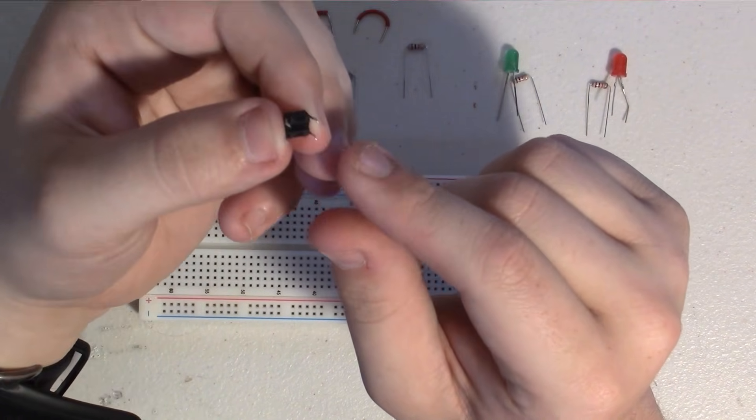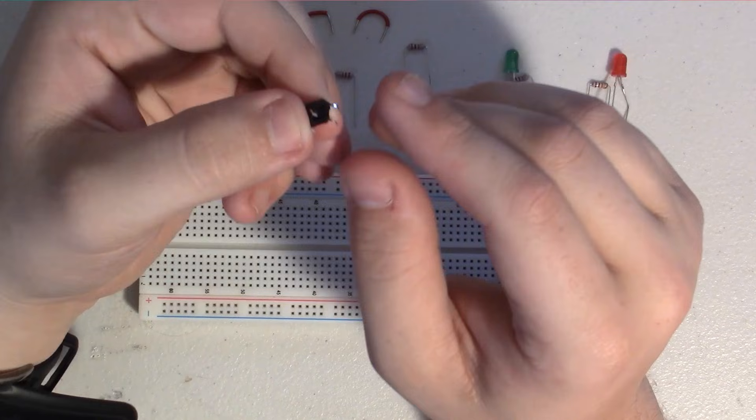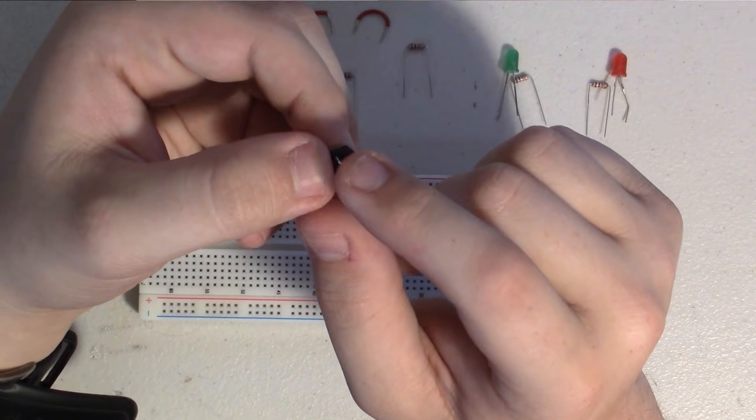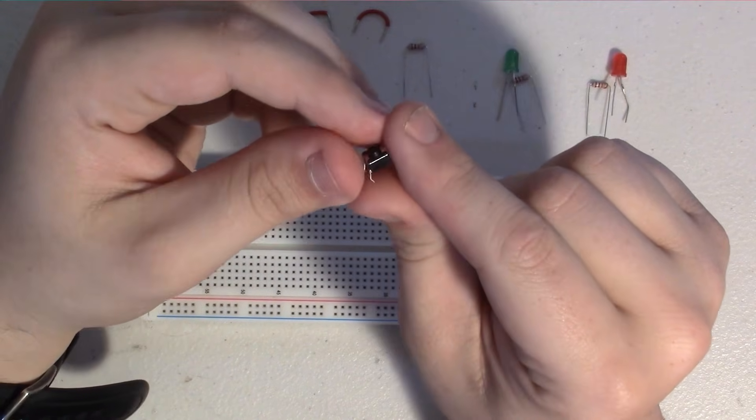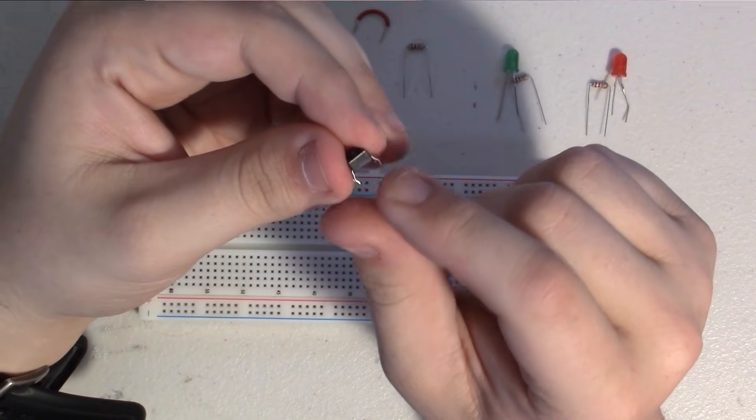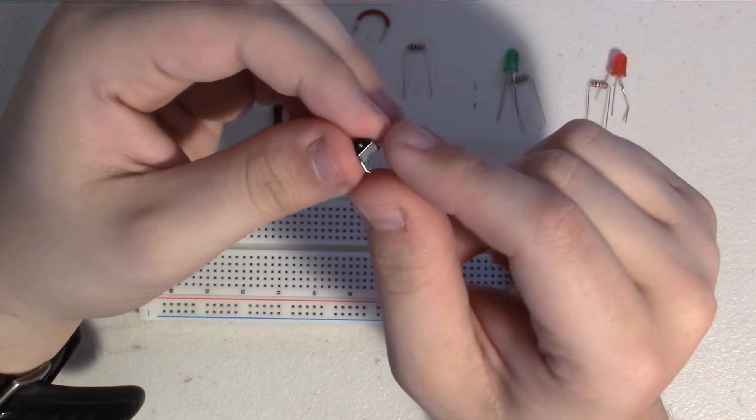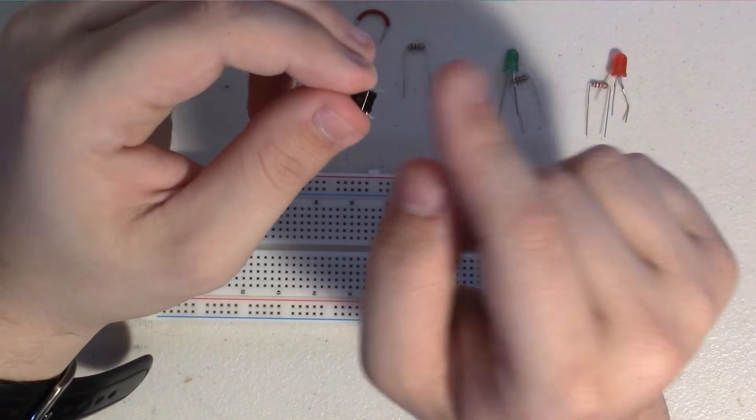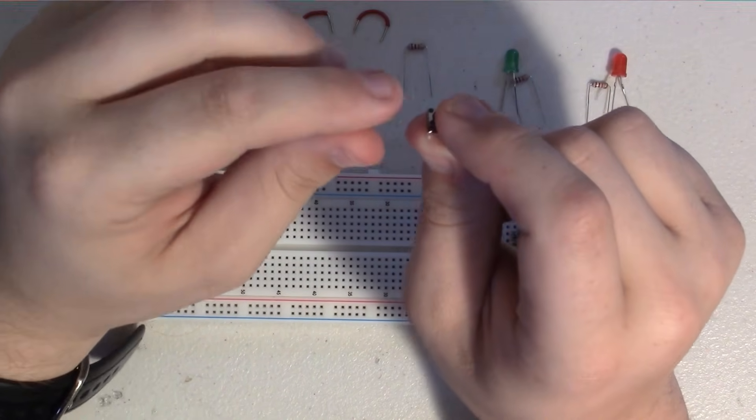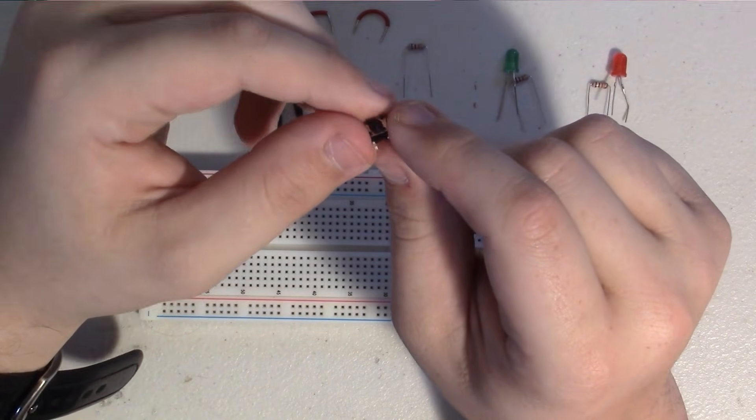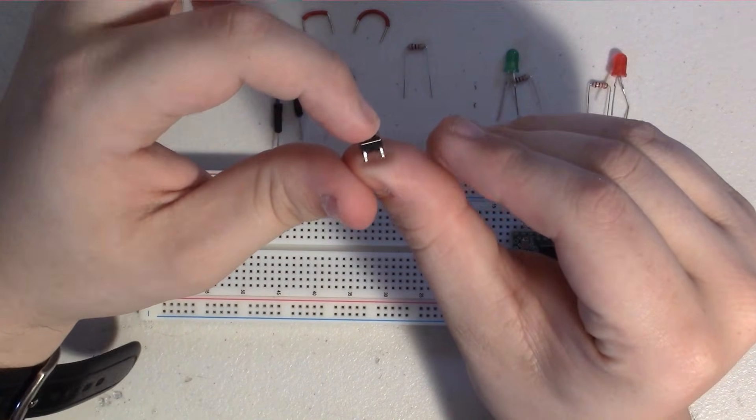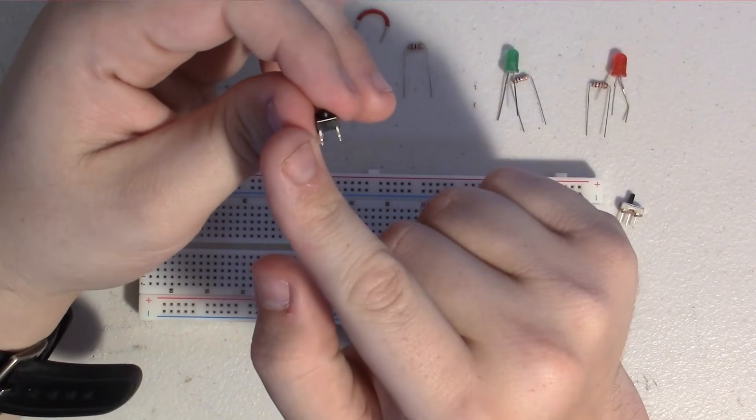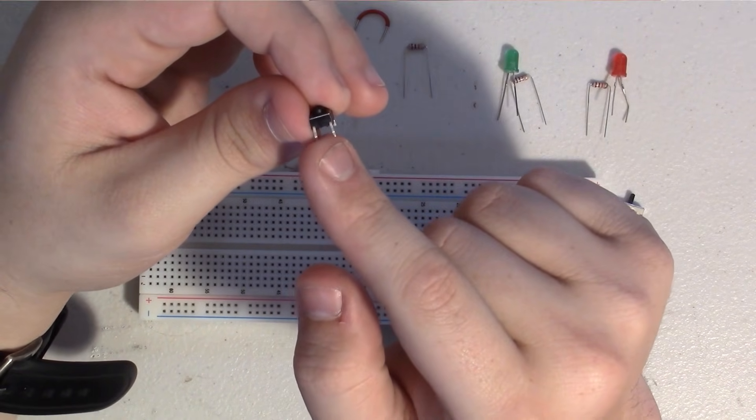So by default, without anything else, this pin here and this pin here are connected to each other, as well as on the other side, this pin and this pin. Really, you can just think of them as one whole side to the button and the other whole side to the button. So what we want to do is when we push the button, this side and this side connect to each other.